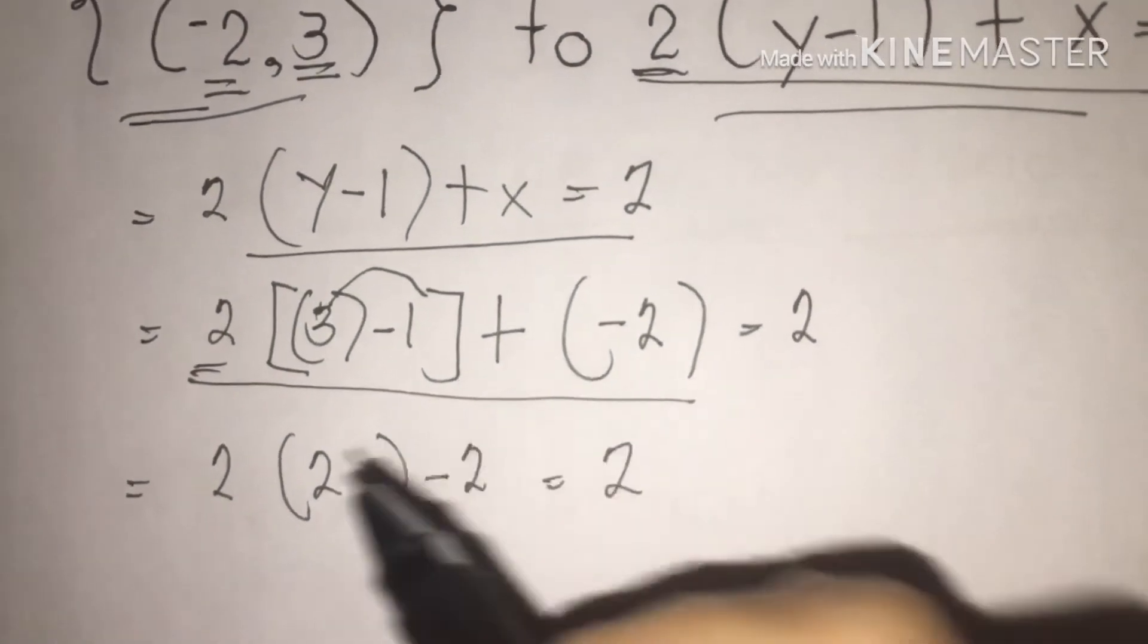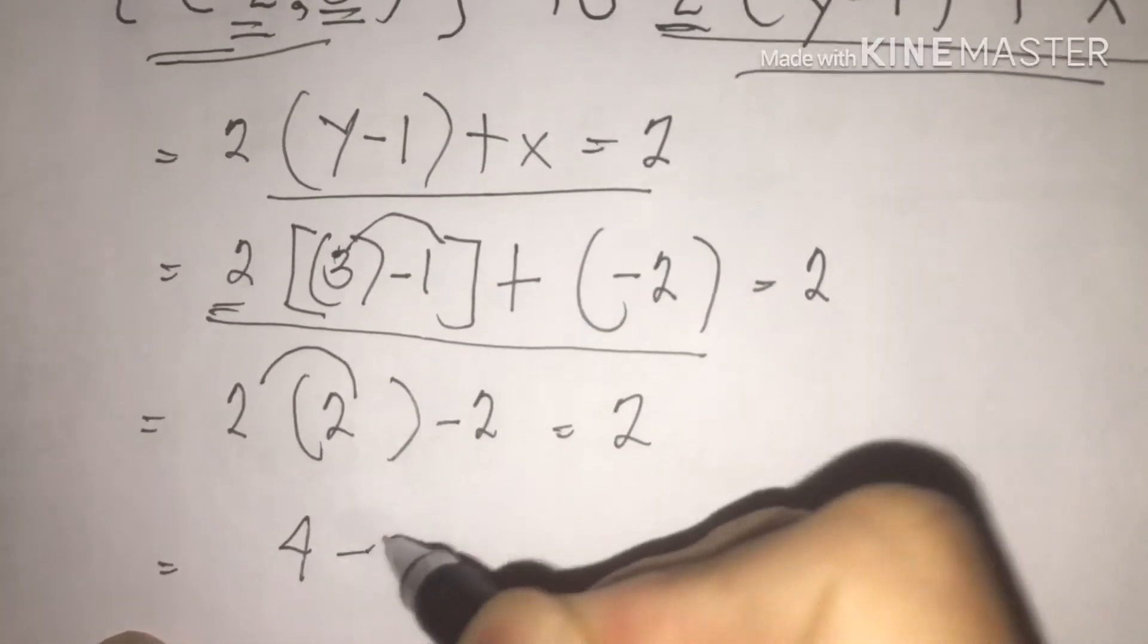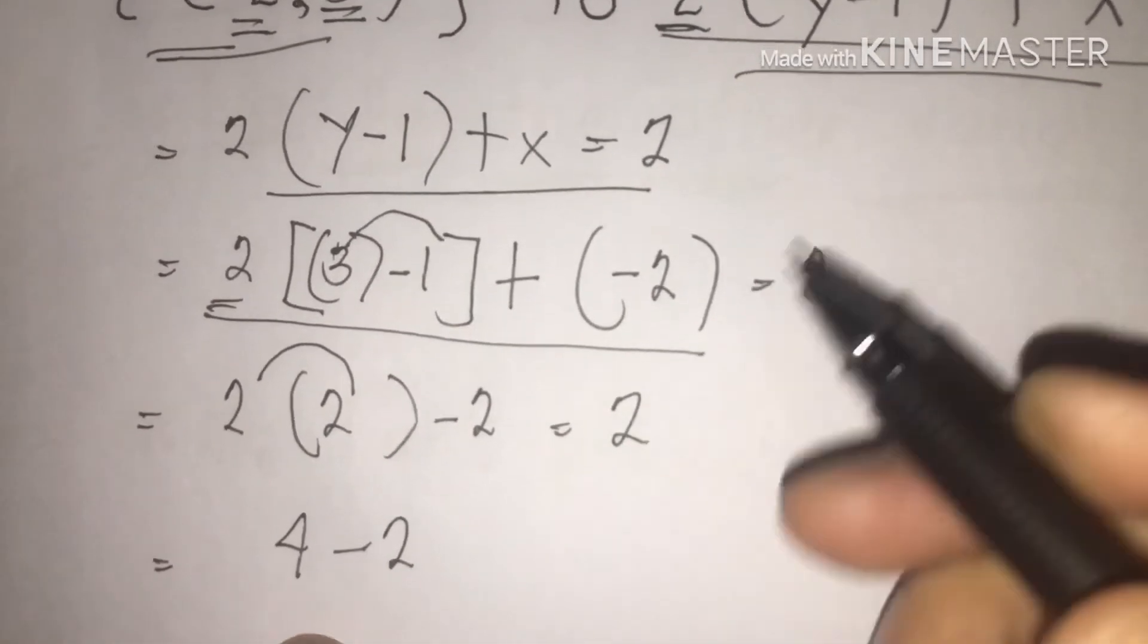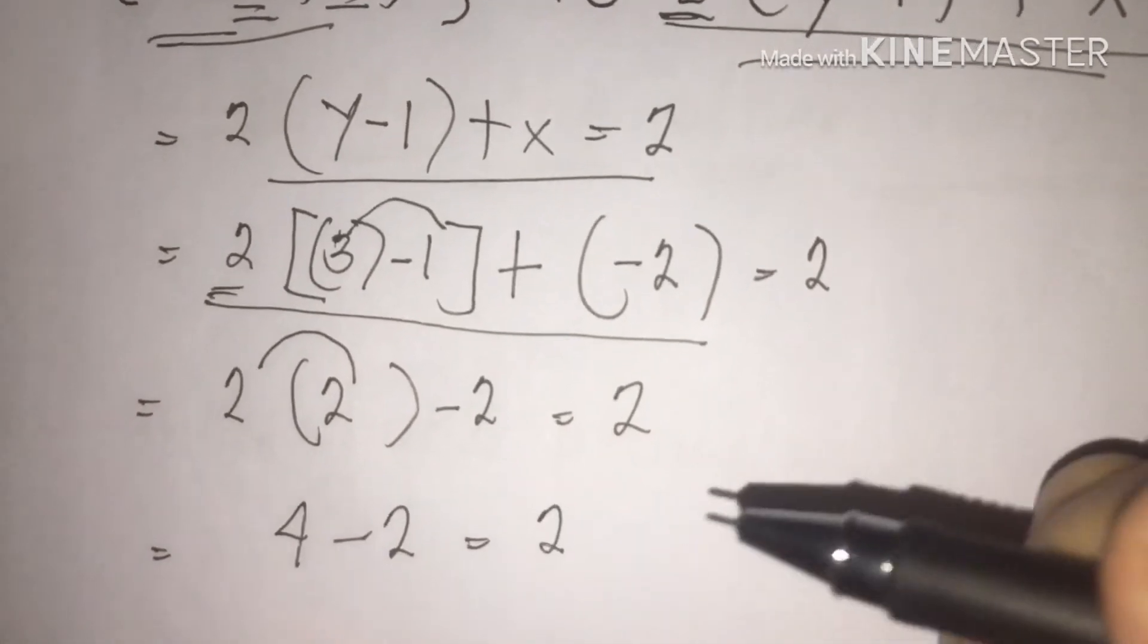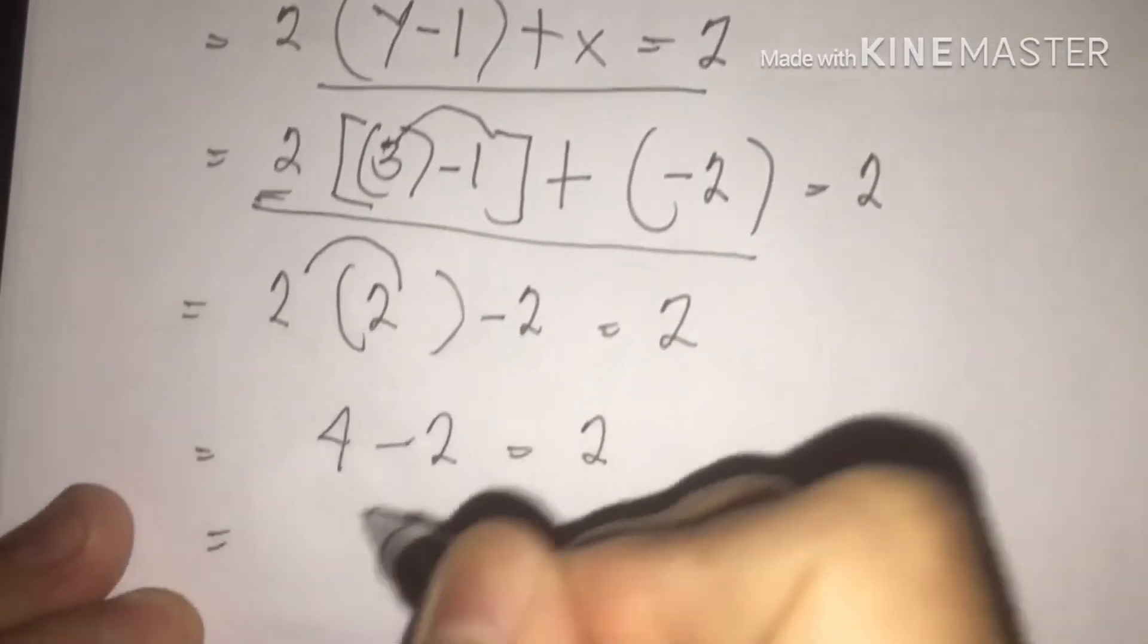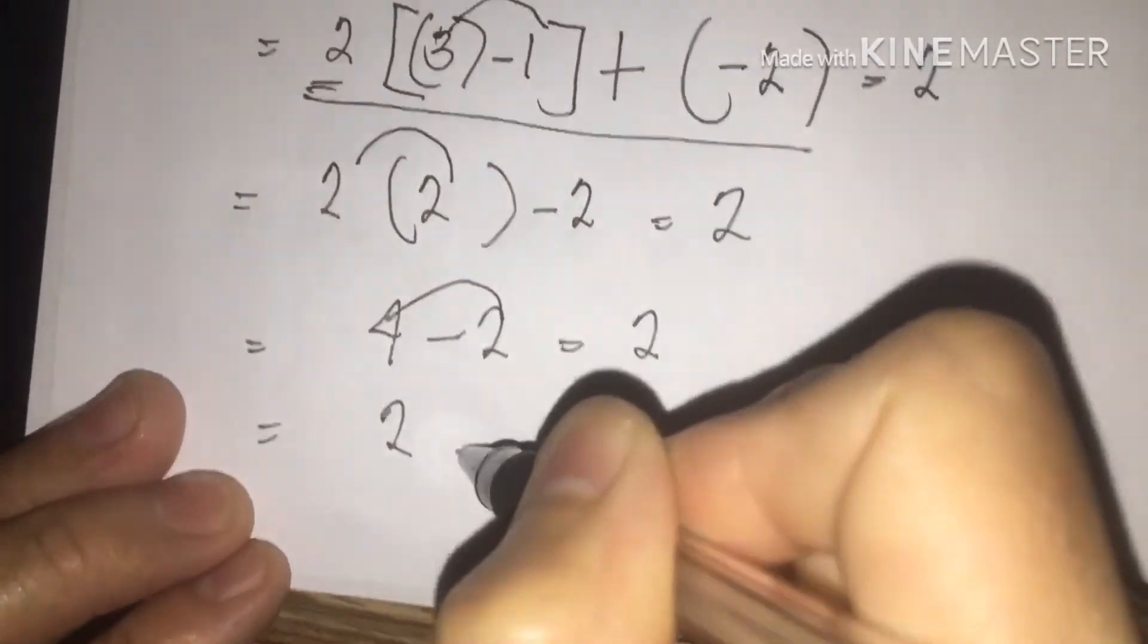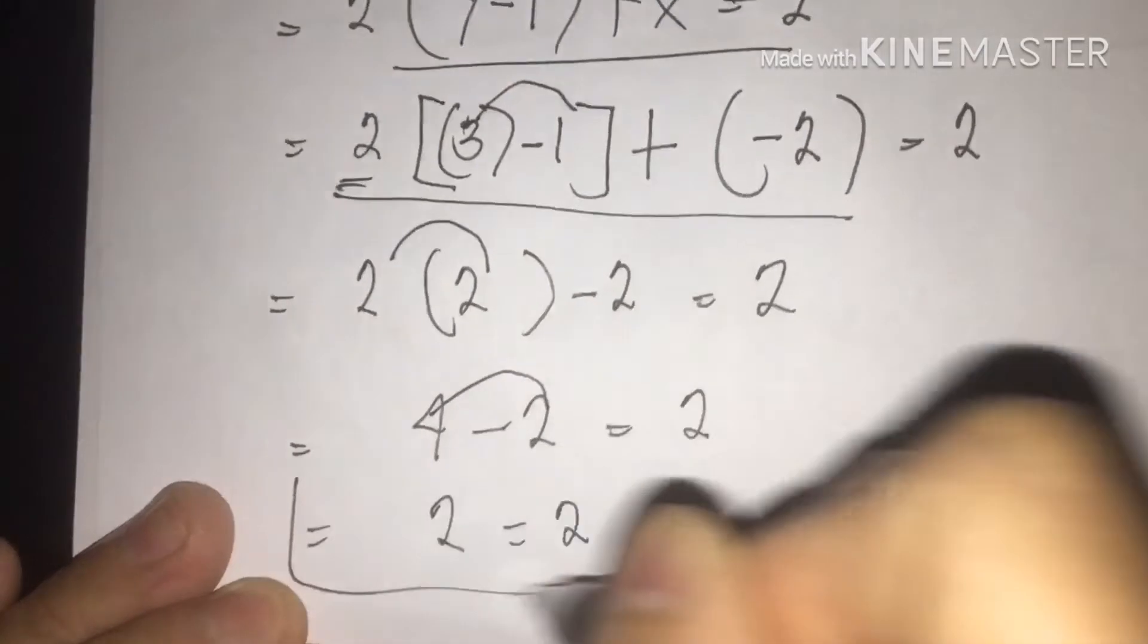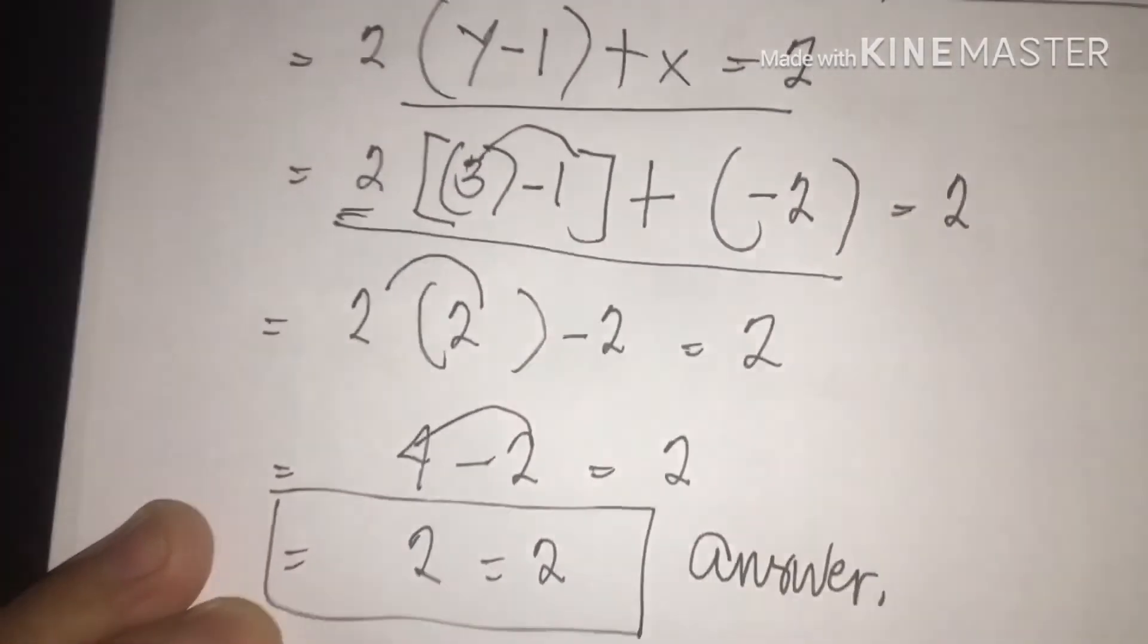Next class, 2 times 2. So, I am going to write 4 minus 2 is equal to 2. So, therefore, this one class, 4 minus 2 is equal to 2. This will be our answer.